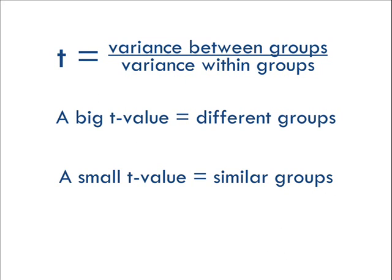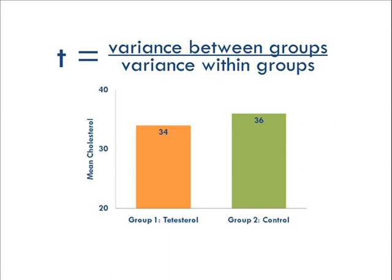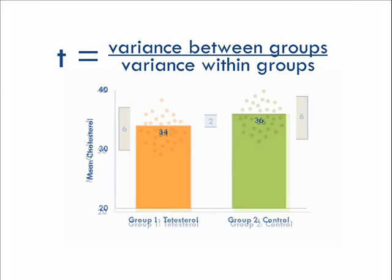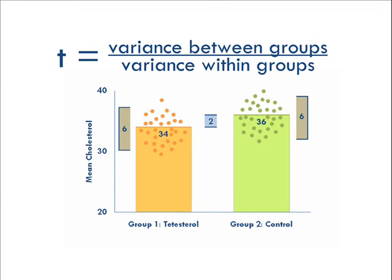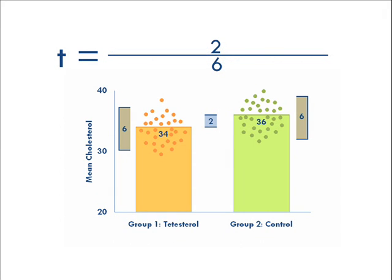You can think of it as a signal-to-noise ratio. The signal — that's the difference — is easier to detect when there's less noise, which is the scatter. In our cholesterol drug example, the difference between groups is about two, while the difference within the groups is about six. Two over six gives us a t-value of one-third, which is not big enough to be reliable. Based on these results, we can't say the drug actually helps lower cholesterol.